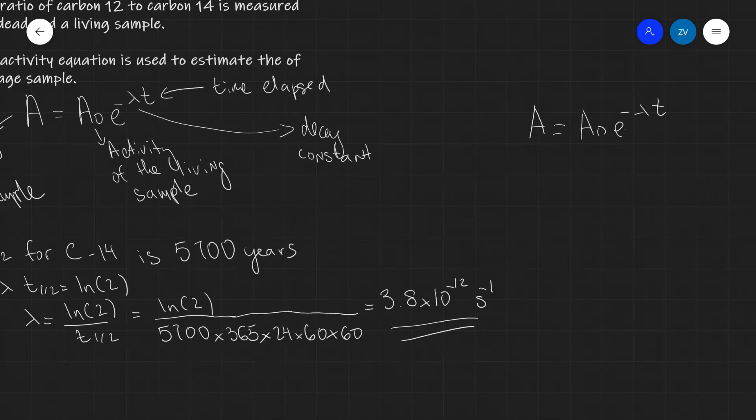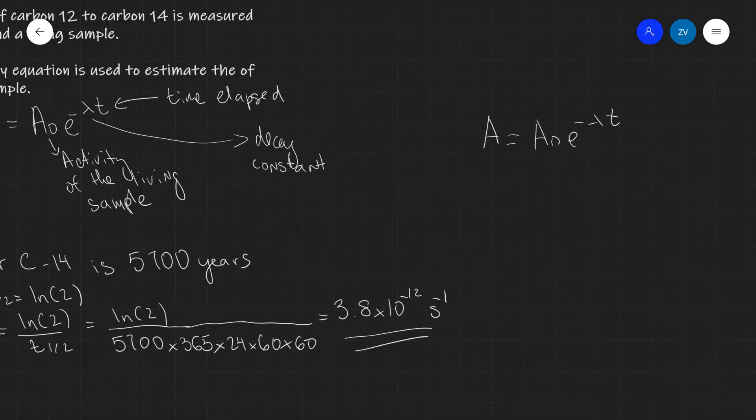Our first step is to write down our equation A = A₀e^(-λt). Our next step is to rearrange for the exponential. So what I get is A/A₀ = e^(-λt). Now I'm going to take the natural log of both sides, so ln(A/A₀) = ln(e^(-λt)).